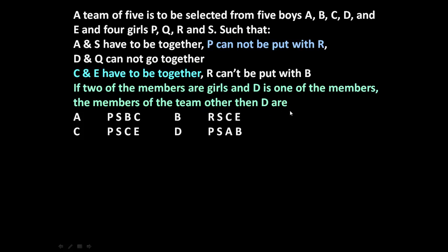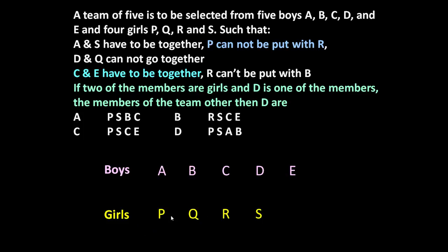If two of the members are girls and D is one of the members, find the members of the team other than D. To answer this question, let us first write 5 boys A, B, C, D and E and 4 girls P, Q, R and S, and go statement wise.